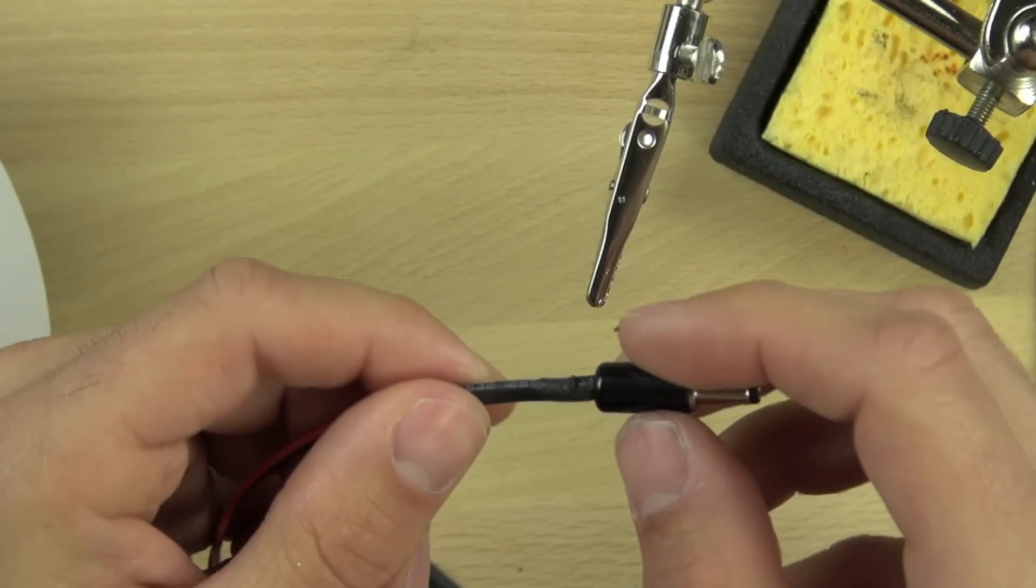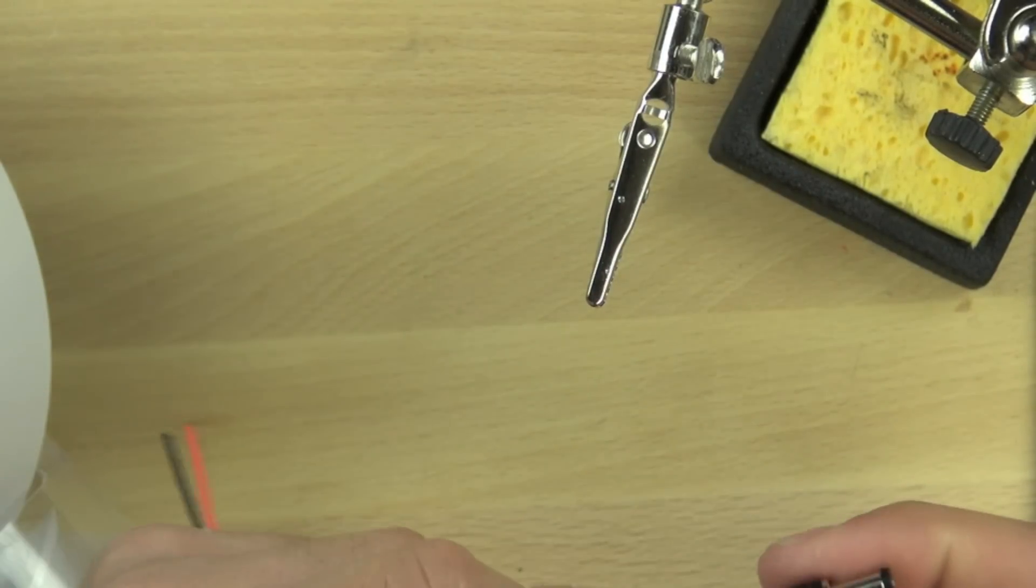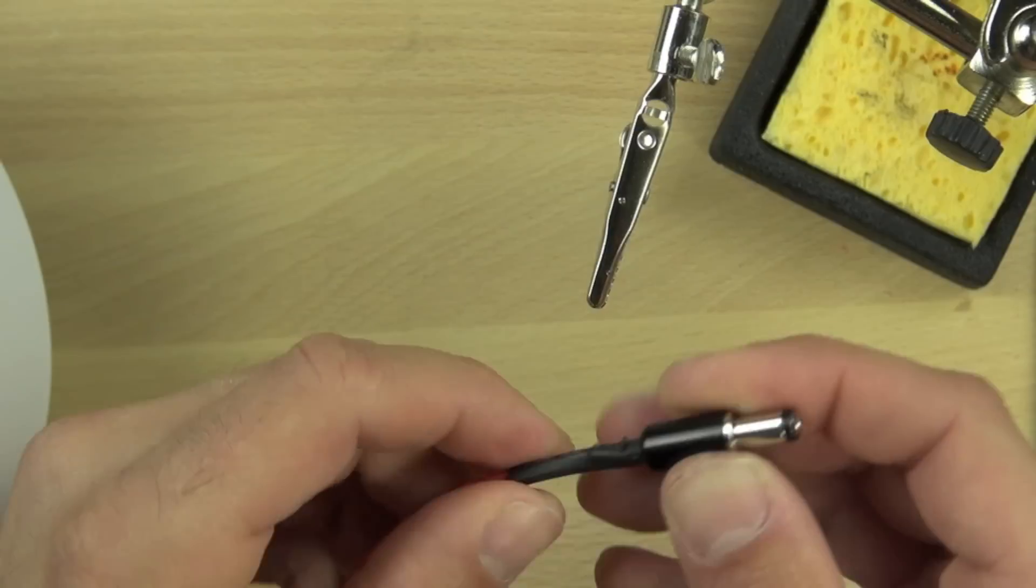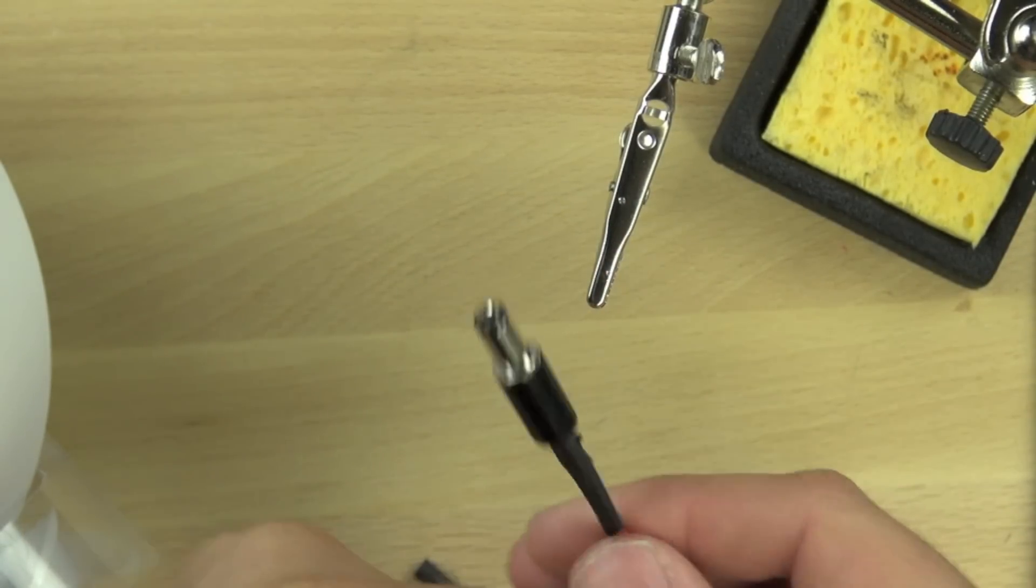Now we're going to insert the plastic fitting, the collar, over the shrink wrap tubing and twist it into place on our connector. We almost have a completely finished connector.